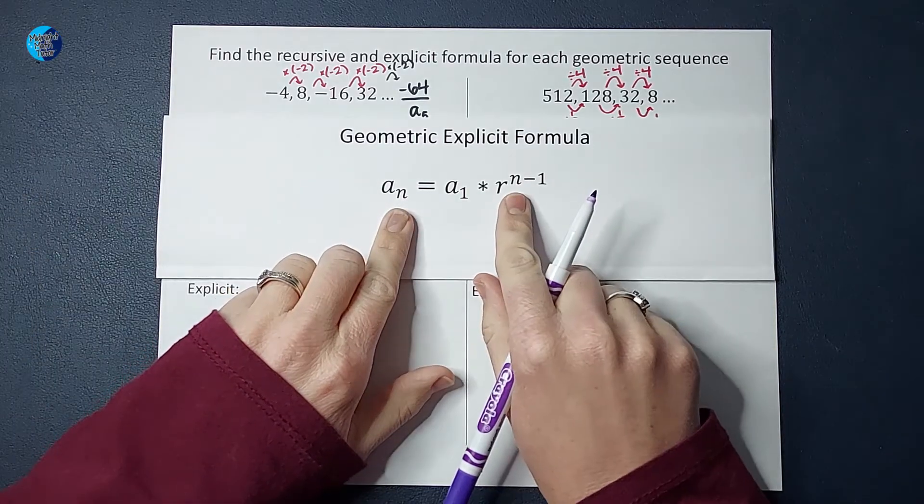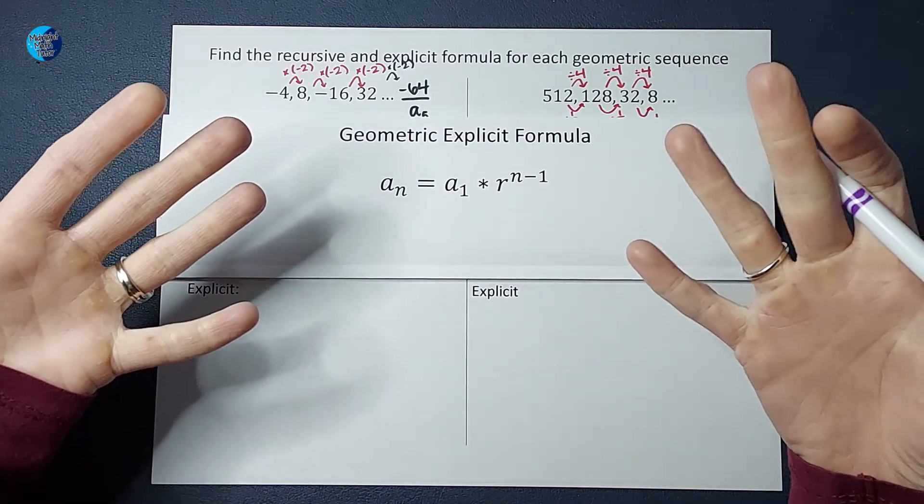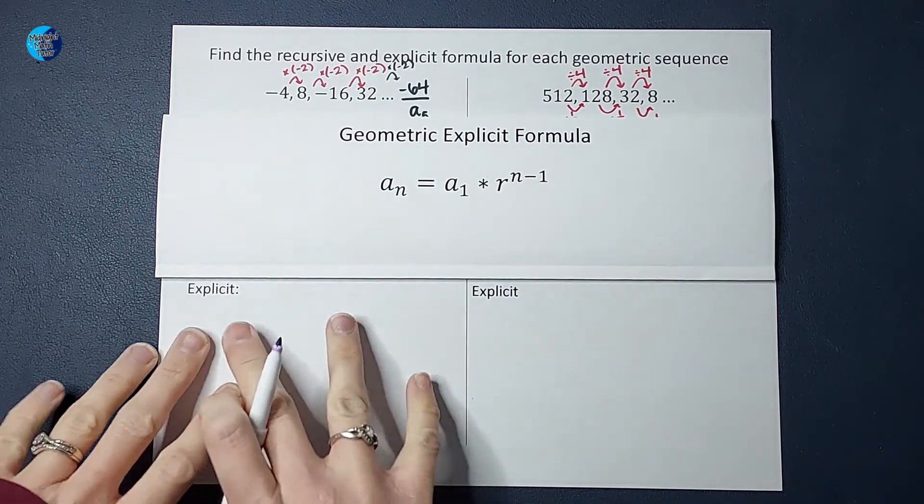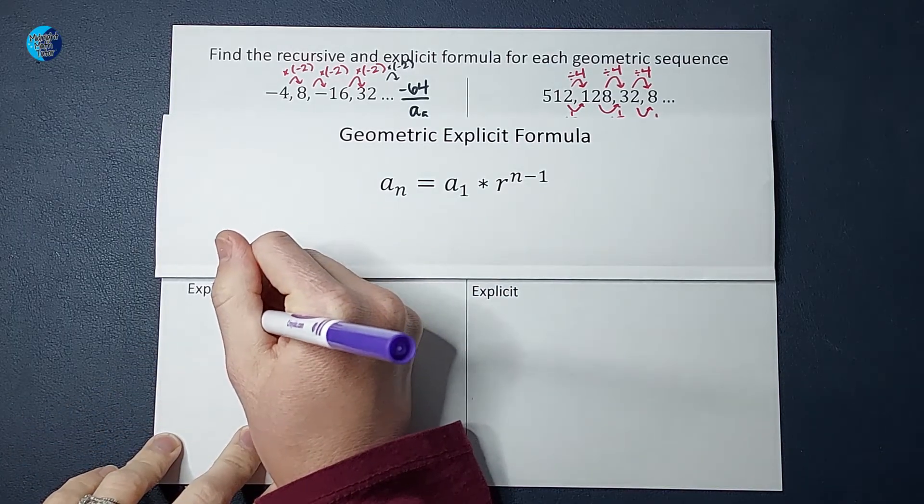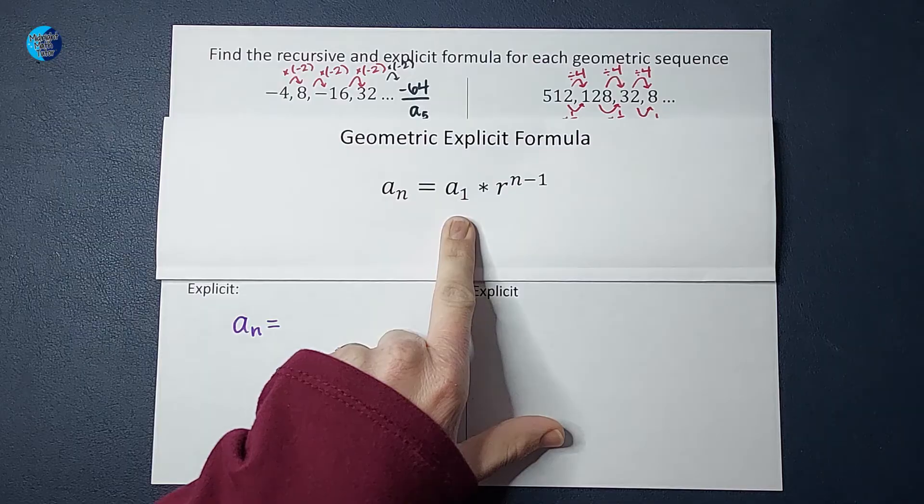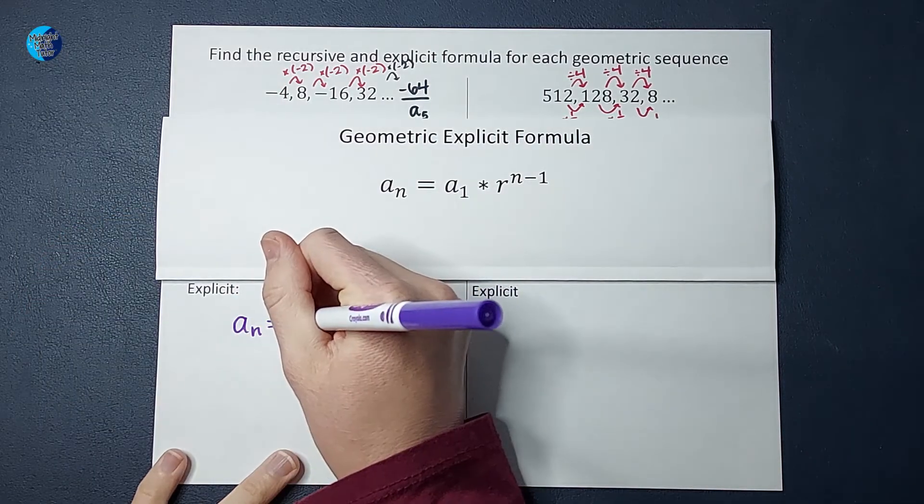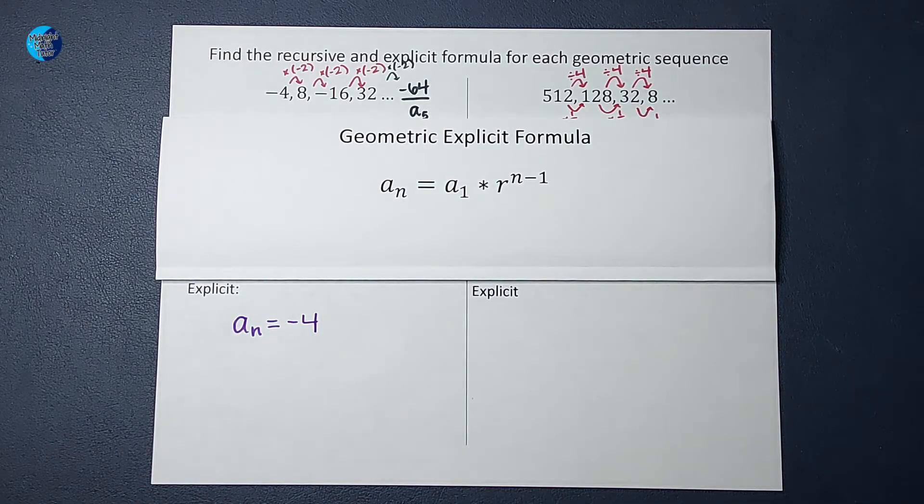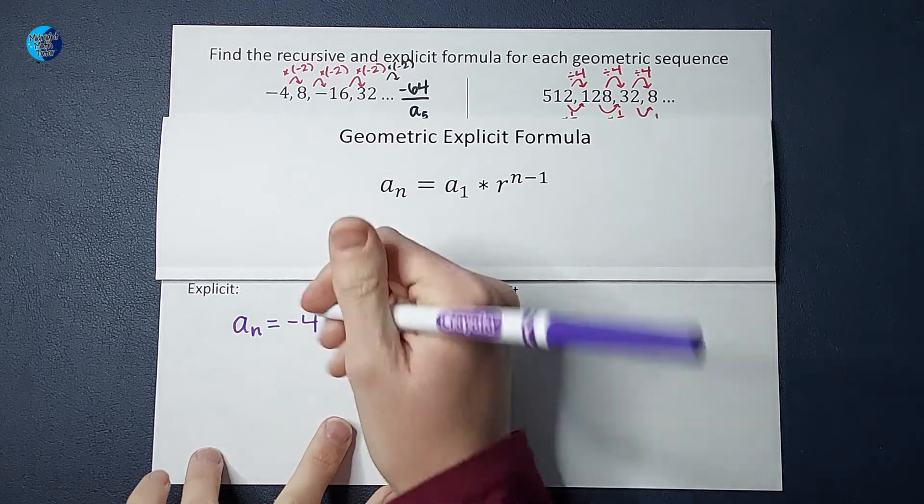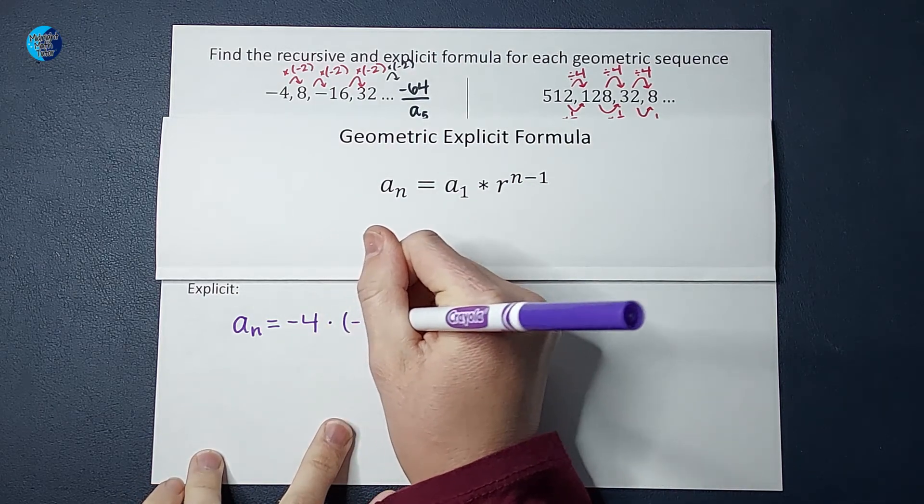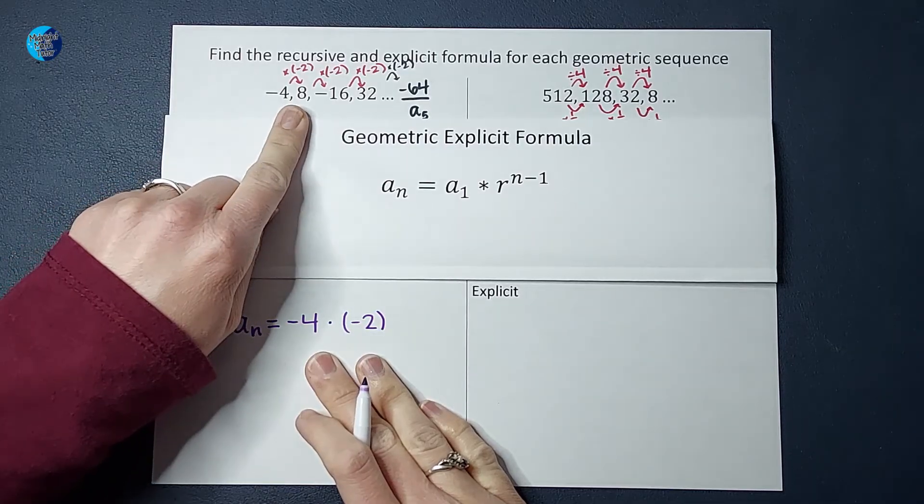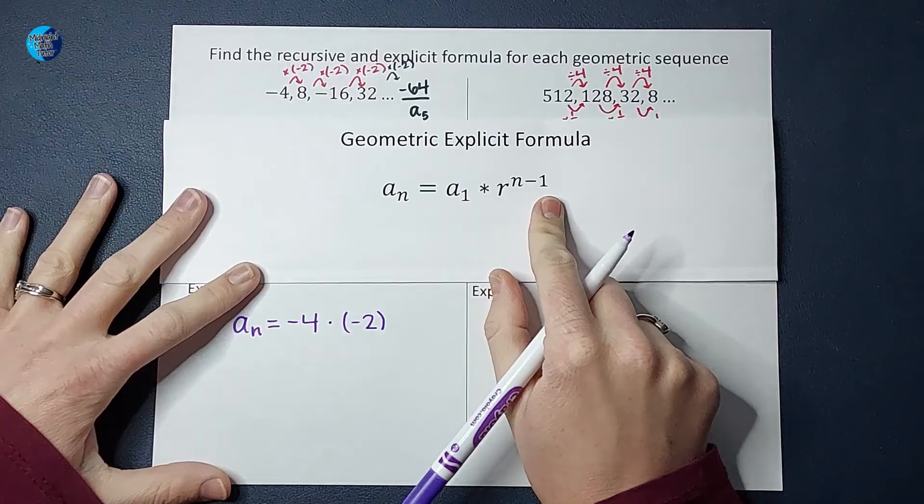When I fill this in, the N's are going to stay N's because that's the number people fill in for whatever term they want to find. We are going to fill in numbers for A sub 1 and r. For my explicit formula, we are saying whatever number you want to find, A sub N, equals the first number in the sequence, A sub 1, which is negative 4, and then we are multiplying by r, the common ratio, which is negative 2. That's where this exponent comes in, N minus 1.